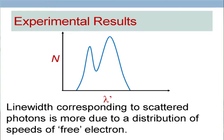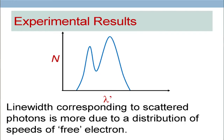Surprisingly, you find two peaks. One peak is completely sharp — which is here. And another peak at a larger lambda, which is comparatively broader. If you perform this experiment at different values of theta, you find that the separation of these two peaks keeps on changing. However, the lower lambda peak essentially remains more or less at the same position. If you increase theta, you will find that the broader peak keeps moving to still larger and larger lambda.